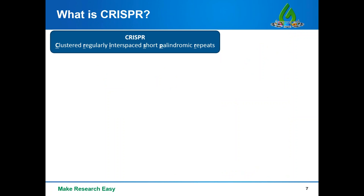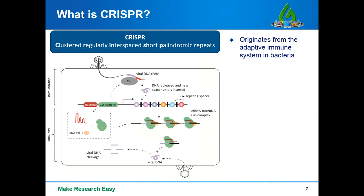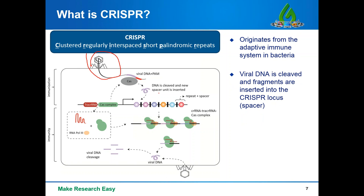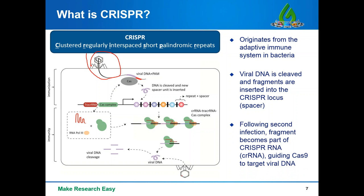What is CRISPR? CRISPR stands for Clustered Regularly Interspaced Short Palindromic Repeats. It originates from the adaptive immune system in bacteria. When a virus infects bacteria, the viral DNA is integrated into the bacterial chromosome as a spacer. For a second infection, that fragment becomes part of the CRISPR-RNA because the bacterial chromosome has tracrRNA and Cas complexes. After transcription, tracrRNA plus Cas combine with crRNA to form the complex, enabling the Cas nuclease to target the viral DNA and cut it.